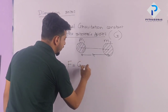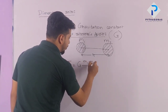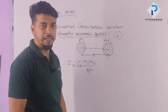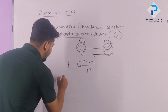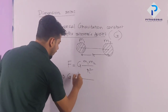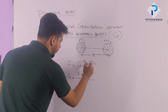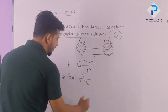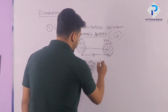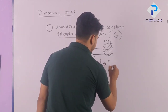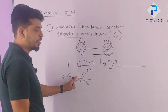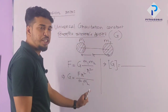Newton's law of gravitation: F is equal to G times m1 times m2 divided by r square. So G is equal to F into r square divided by M1 into M2. So let's find the dimension of capital G.